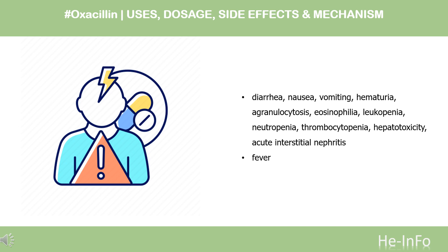High doses of oxacillin have been reported to cause renal, hepatic, and nervous system toxicity. Common to all members of the penicillin class of drugs, oxacillin may cause acute or delayed hypersensitivity reactions. As an injection, oxacillin may cause injection site reactions, which may be characterized by redness, swelling, and itching.